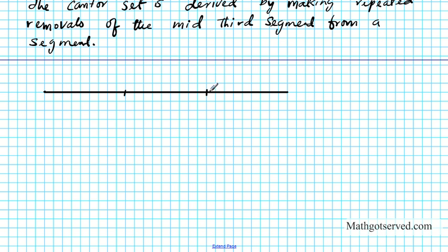That's the next third. So you can visualize this as: this is one-third, and this is two-thirds. This is 0 and this is 3 over 3. So this can be viewed as stage 0 of the counter set.